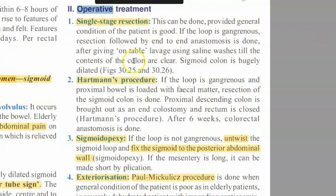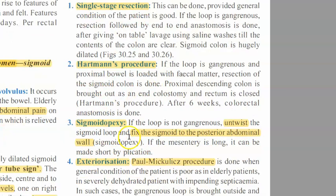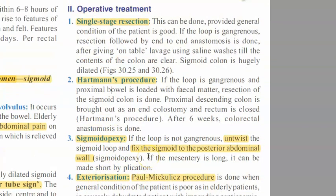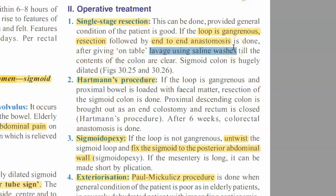For operative treatment, the options are: single stage resection, Hartmann procedure, sigmoidopexy, and exteriorization. In single stage resection - if the loop is gangrenous, you resect it and perform end-to-end anastomosis, connecting the proximal and distal ends. You then give saline lavage washes until the colon contents are clear.